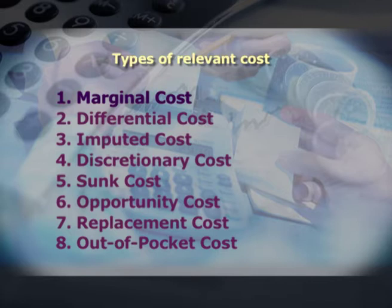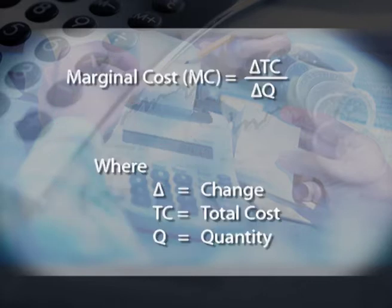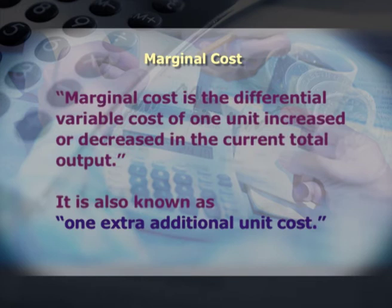Let us begin with marginal cost. Marginal cost means the difference in total cost with the manufacturing of one additional product — that is, it is the differential variable cost of one unit increase or decrease in the current total output. It is also known as the extra additional unit cost. Marginal cost is generally taken as a variable cost because variable cost changes with an increase or decrease in the level of output. Fixed cost is considered a period cost, assumed to already be covered in the total cost of the current level of output. Marginal cost is helpful in making price changes when unexpected orders are received, and in make-or-buy decisions.